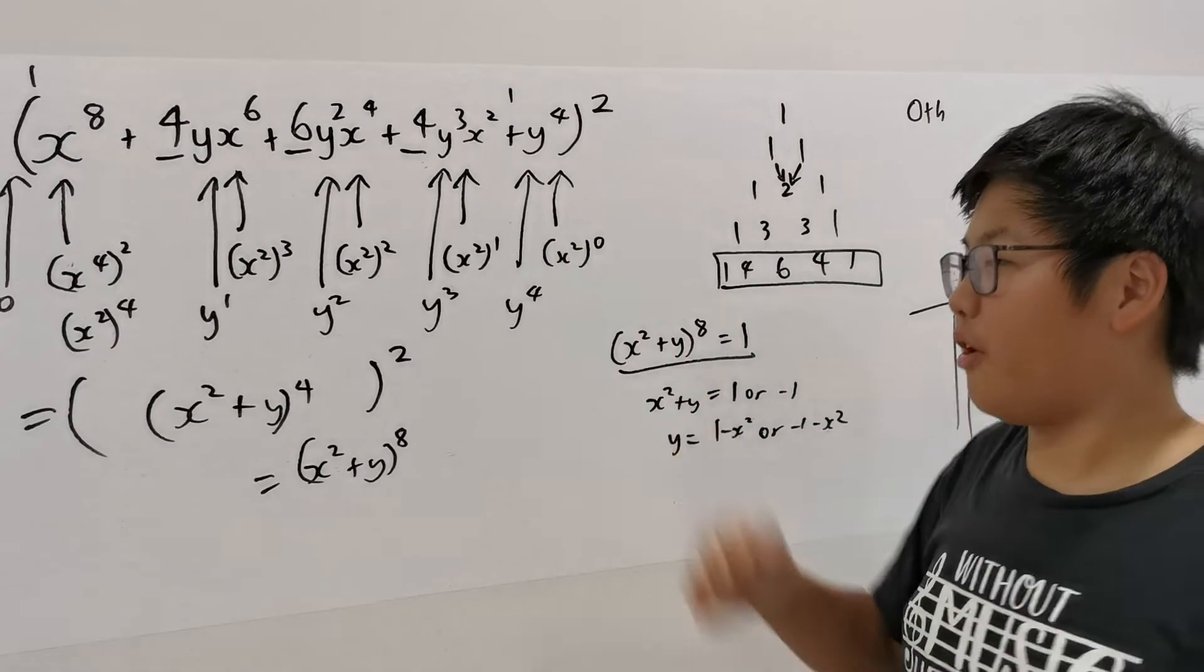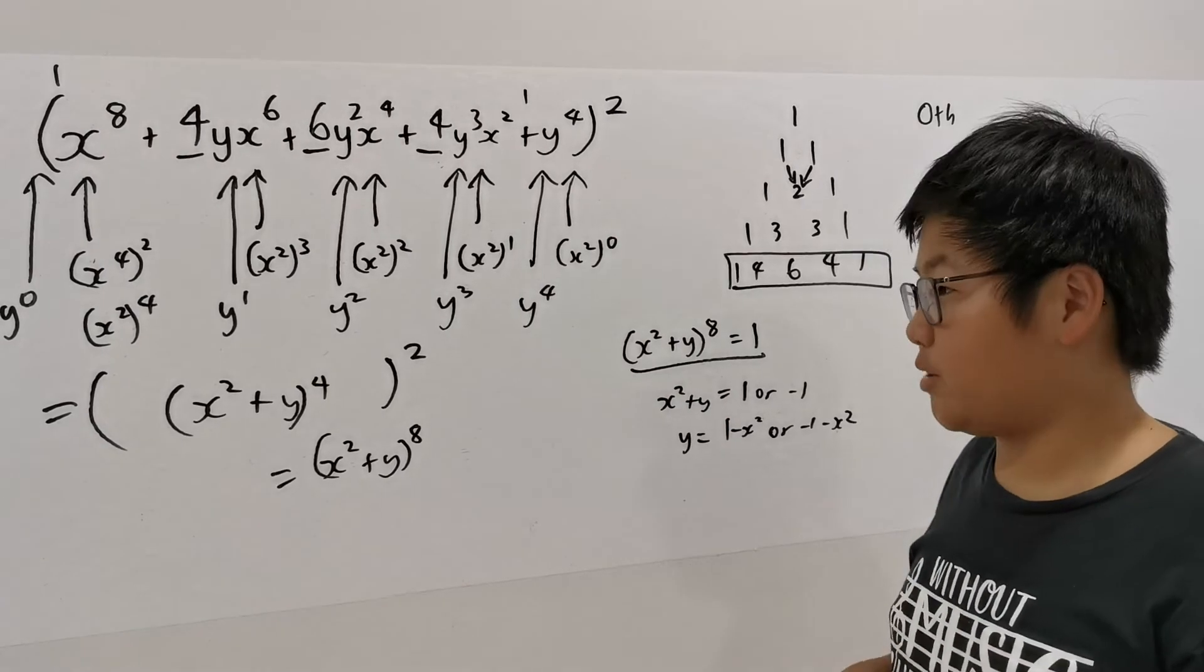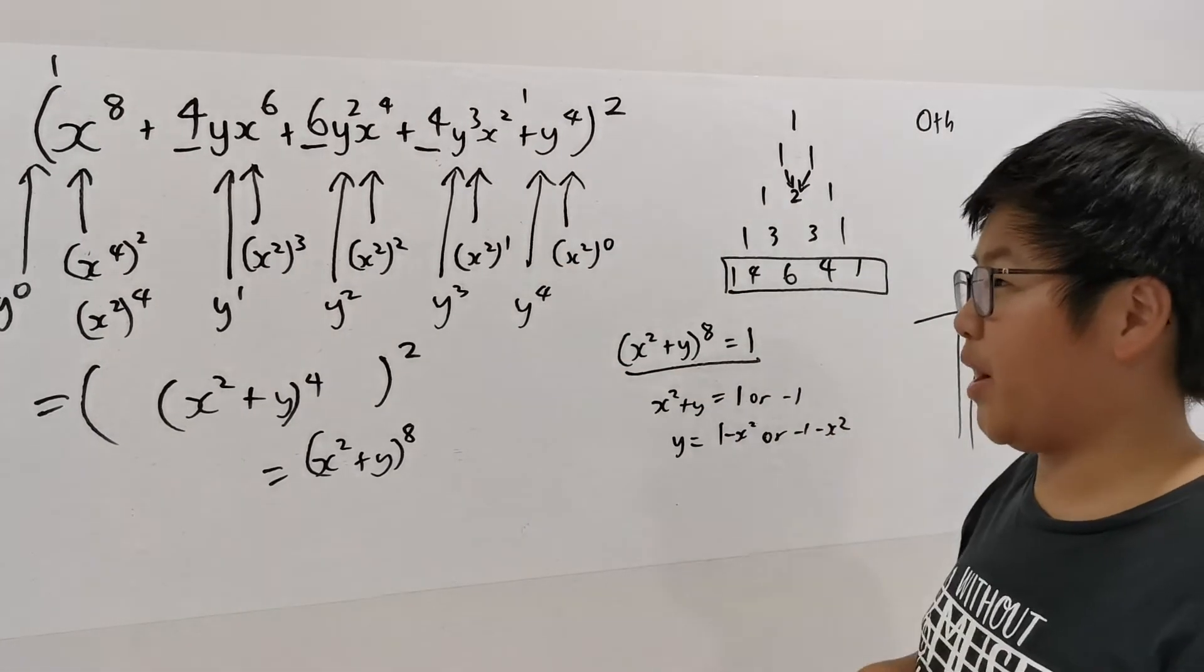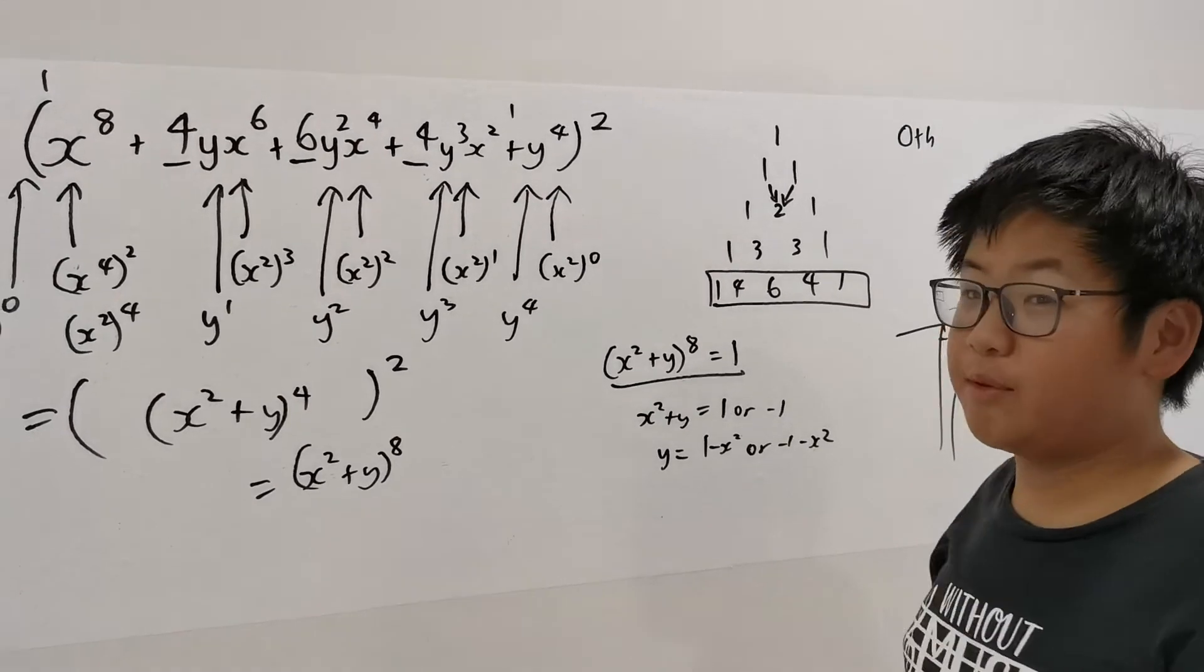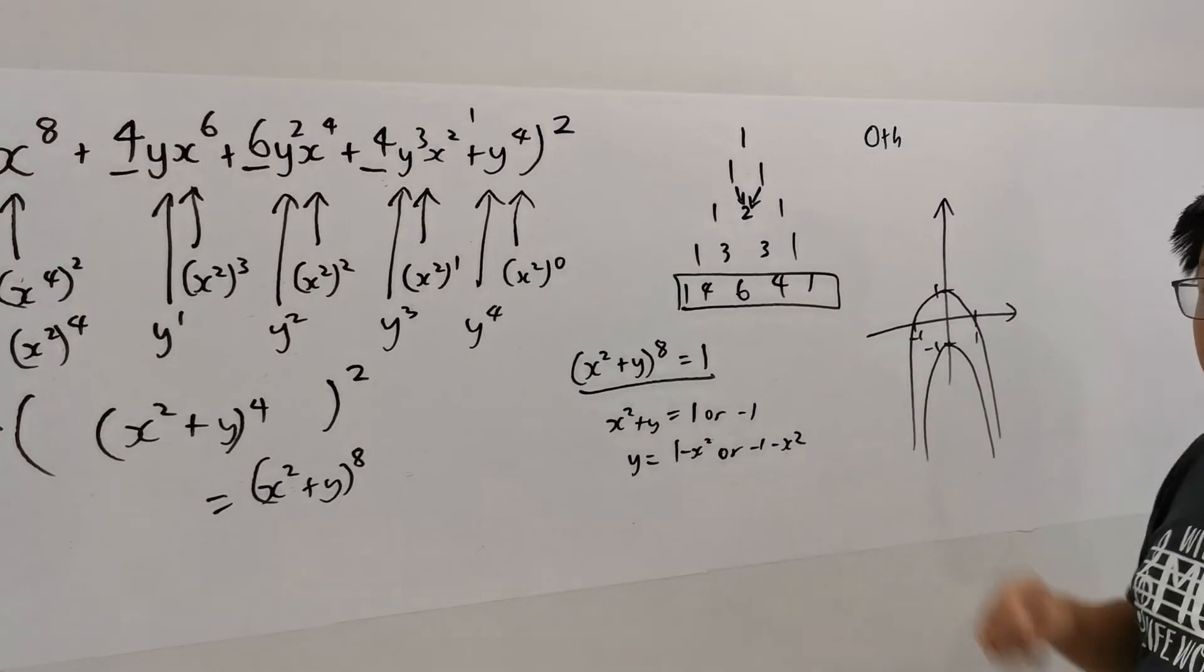There you have it! This is about a formidable looking expression. As we dissect it, this becomes a binomial expansion, which can be collapsed readily with the help of Pascal's Triangle.